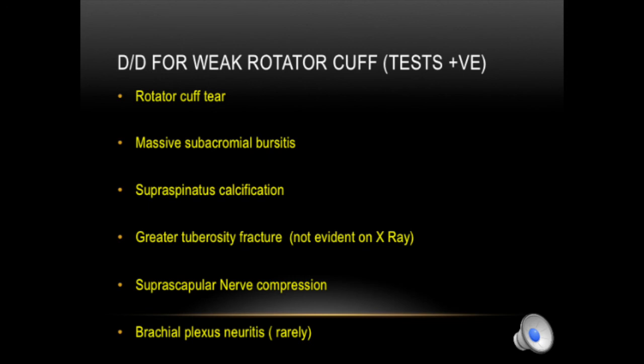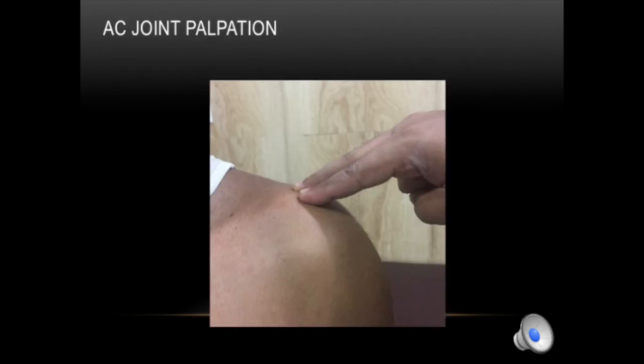In brachial plexus neuritis, deltoid and other muscles may be involved depending on which nerve roots are affected. Finally, always palpate the AC joint and compare with the normal side to see if it is more tender, which supports a diagnosis of AC joint arthritis, synovitis, or other AC joint pathology.